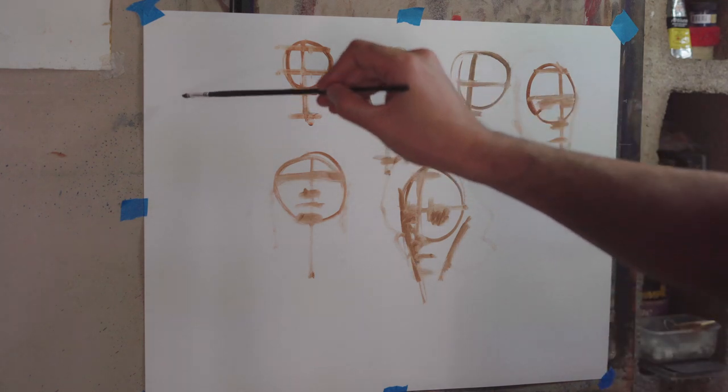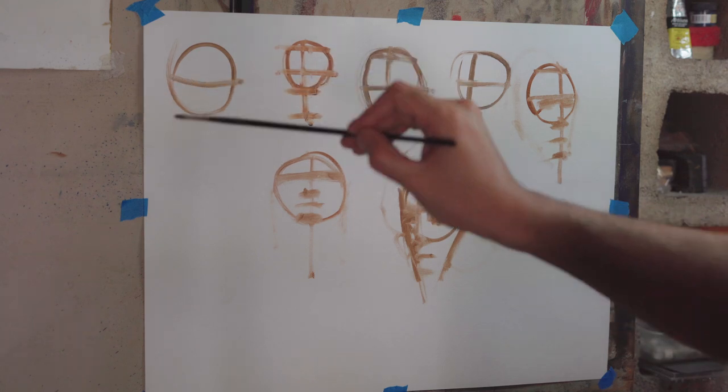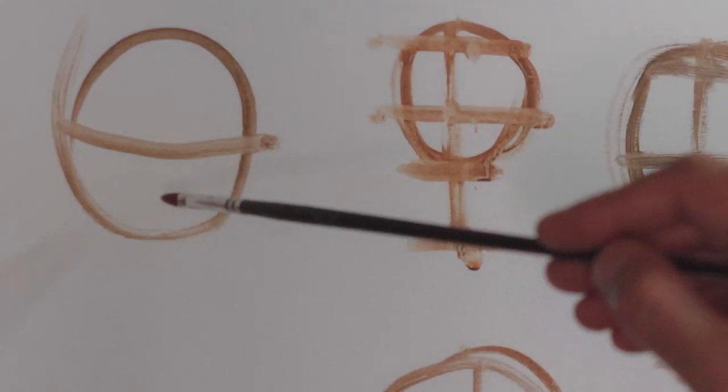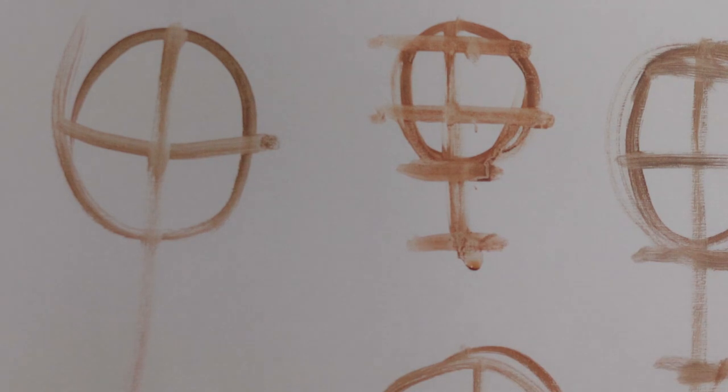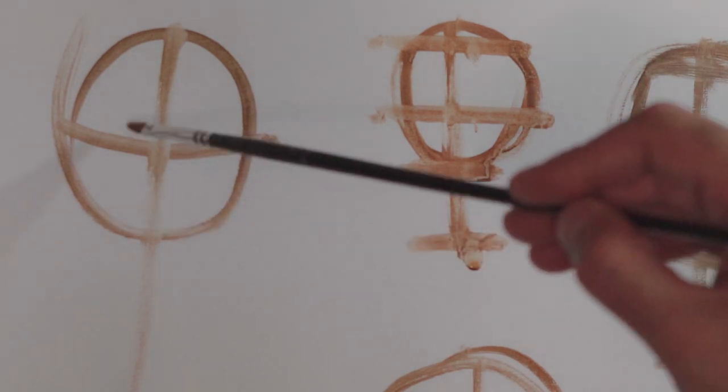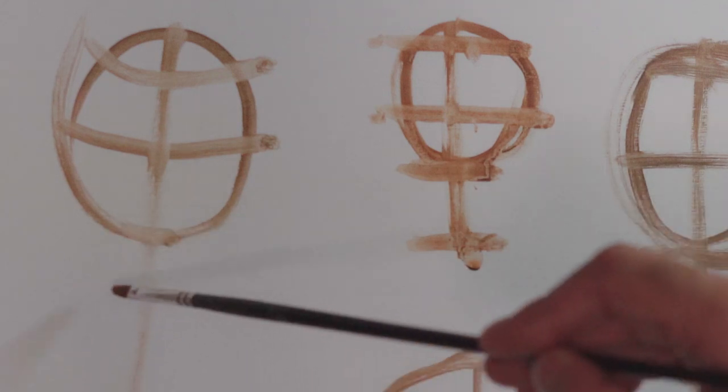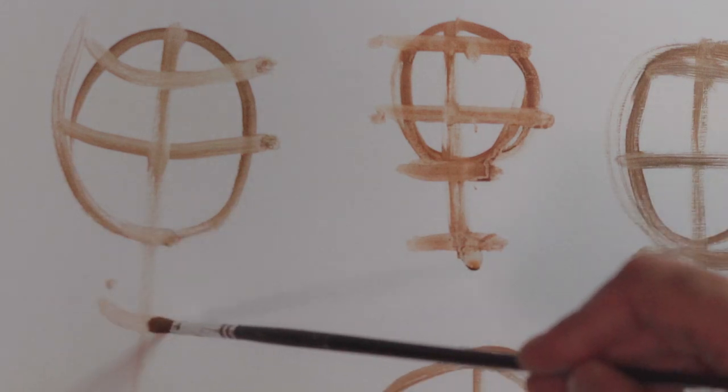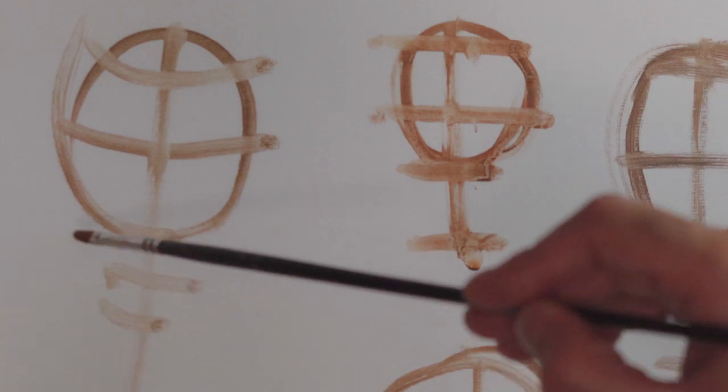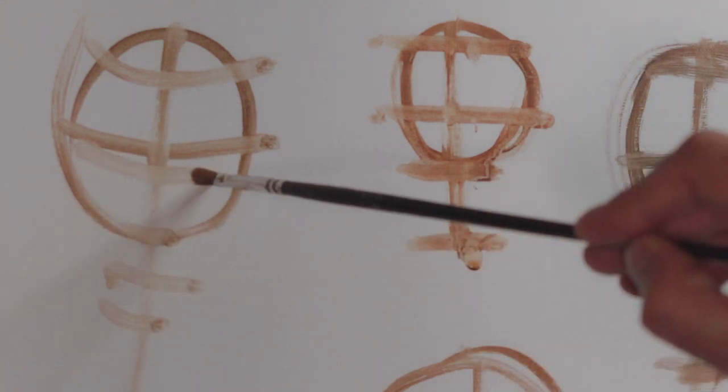We'll do it again. This is looking down a little bit. Center line, hairline is here, nose, chin, mouth, and those are the eyes here.